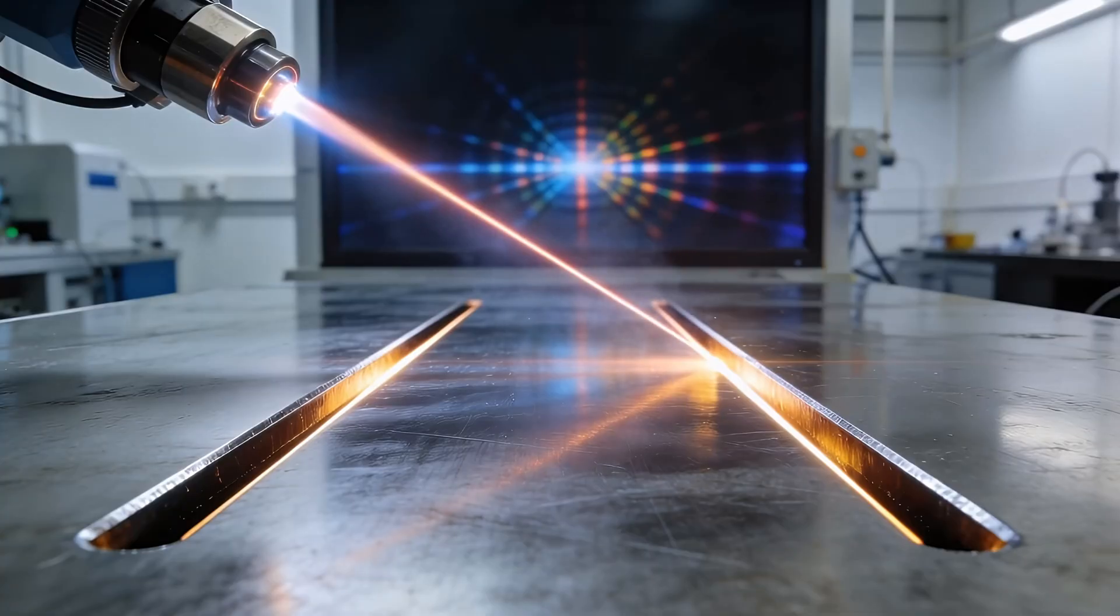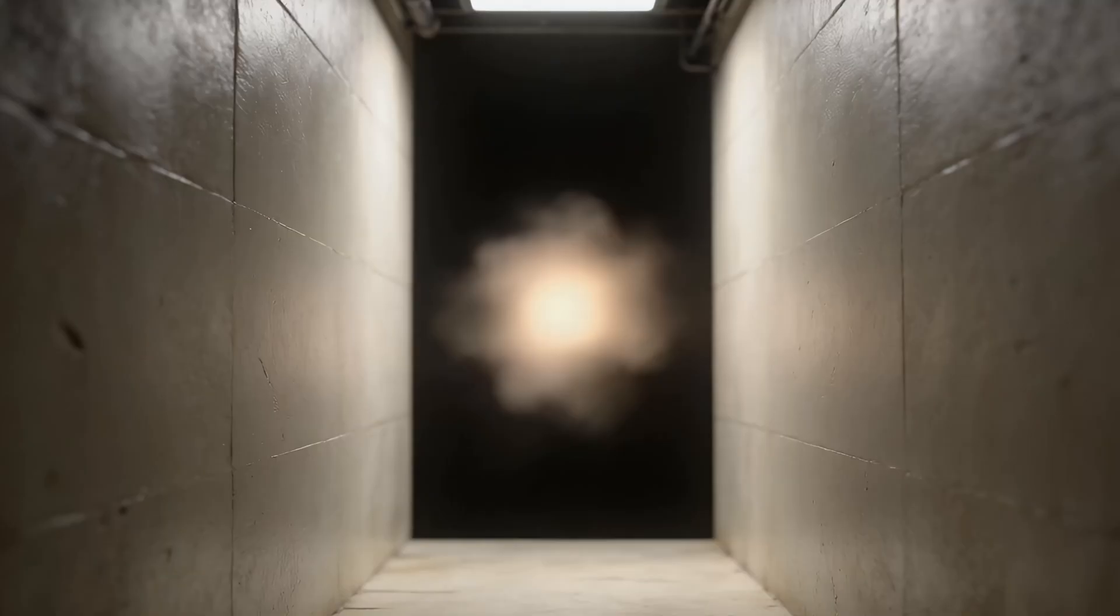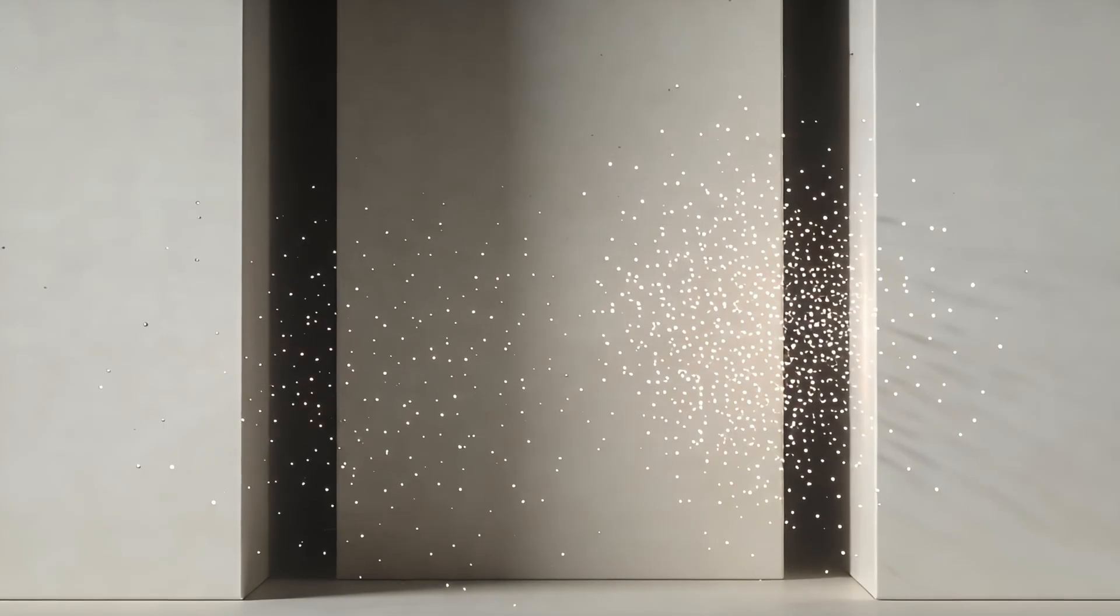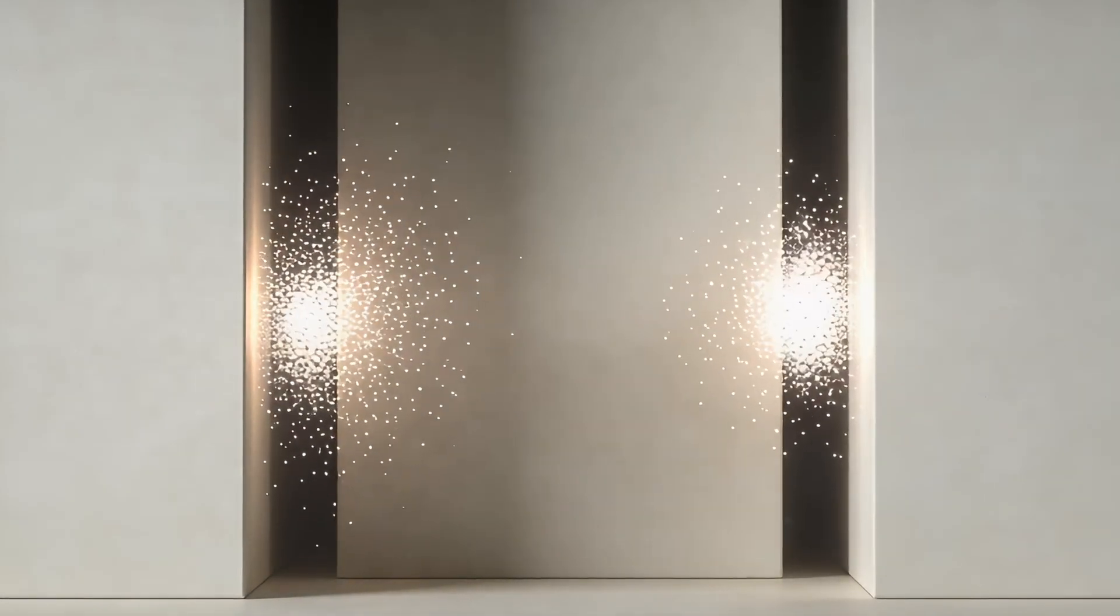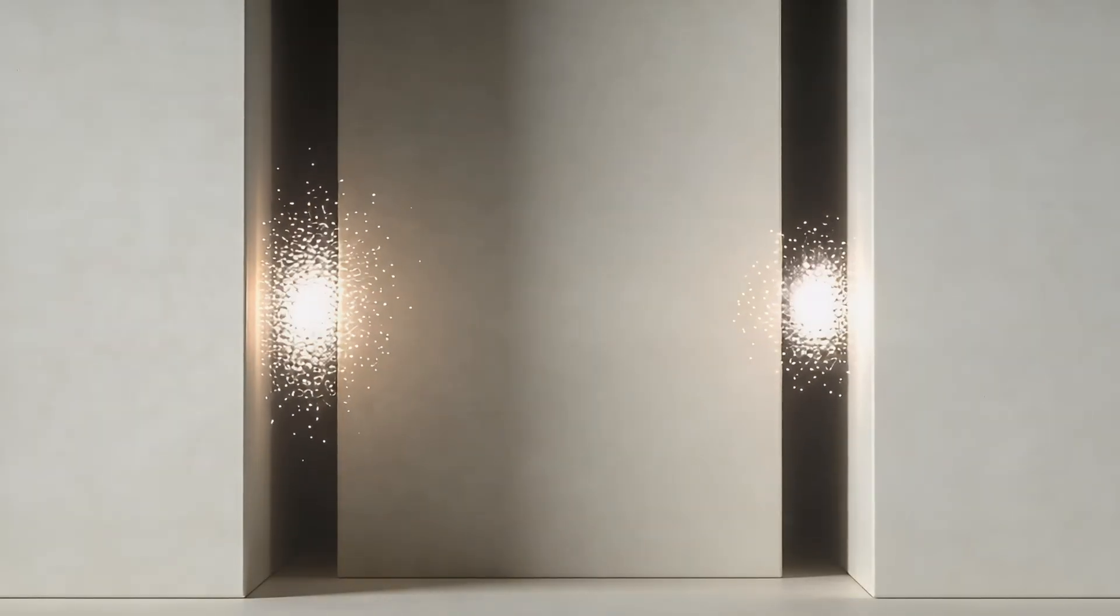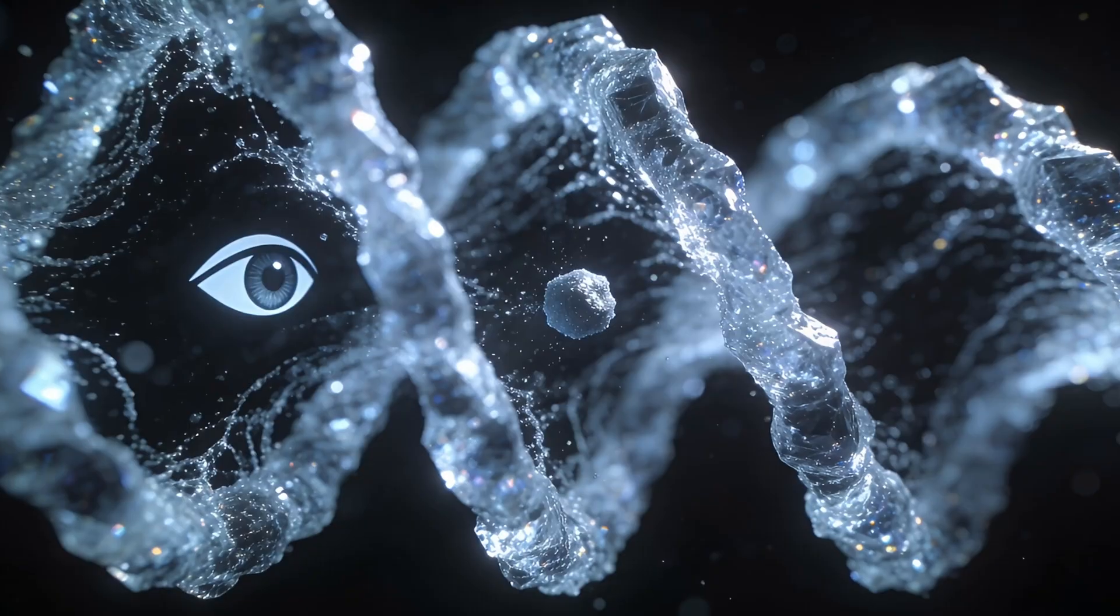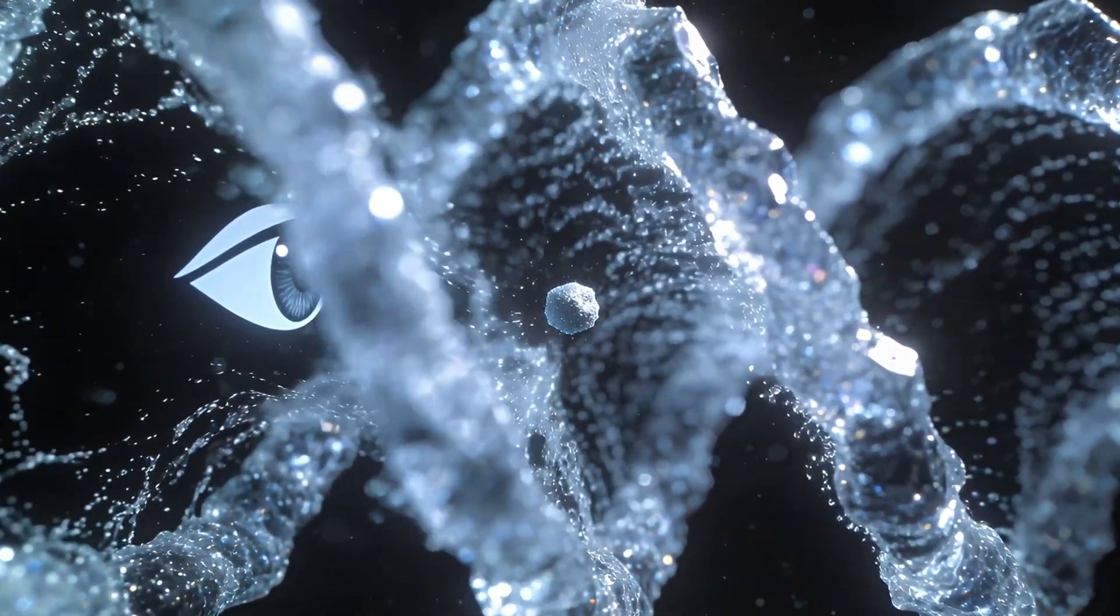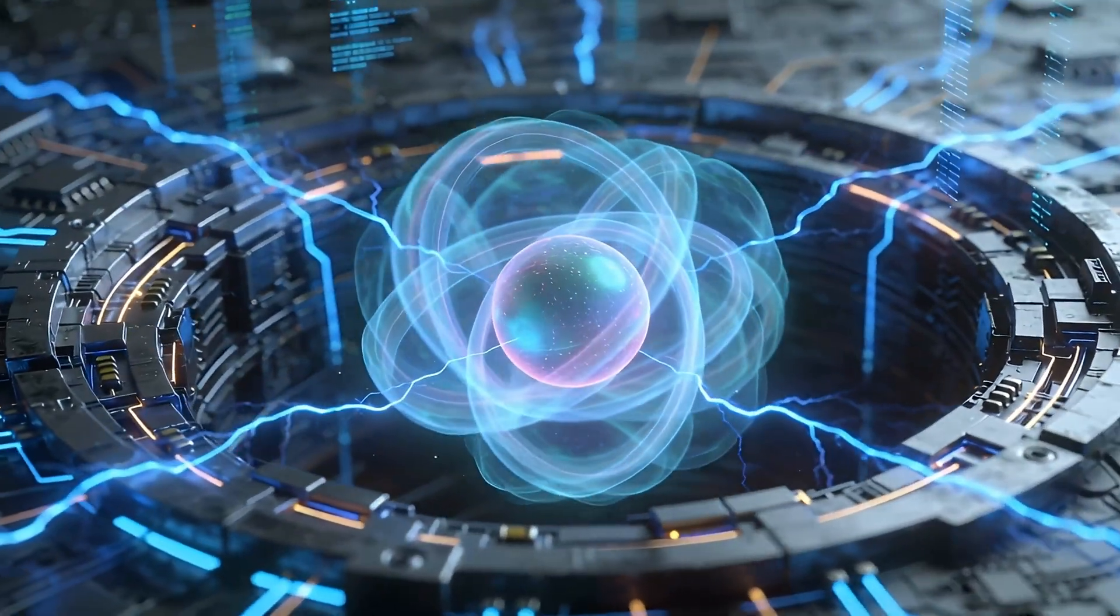They set up a detector at the slits to see which one each photon went through. And boom! The interference pattern vanished. Instead, the photons hit the wall in two sharp piles, right behind each slit, like they were behaving as solid particles now, going through one slit or the other. No spreading out. No interference. The only difference? We were observing them, measuring their path. And somehow, the act of looking collapsed the wave into a particle. This is the observer effect in a nutshell.